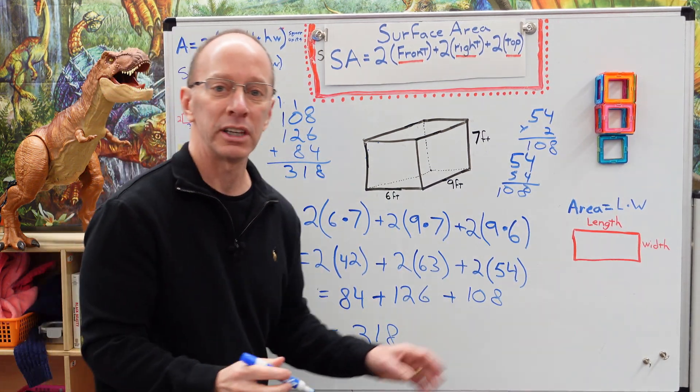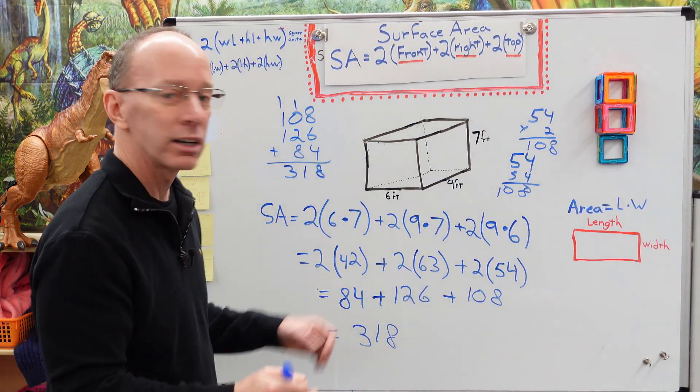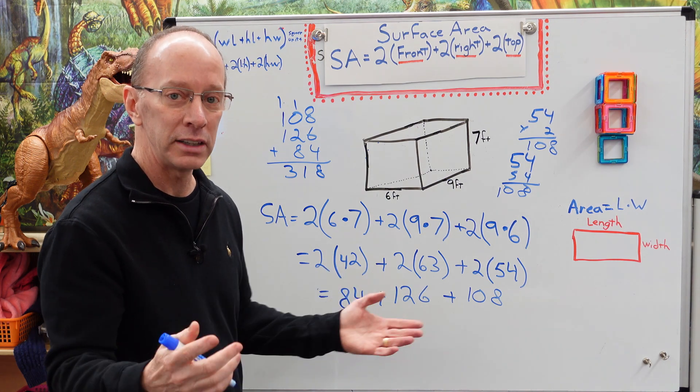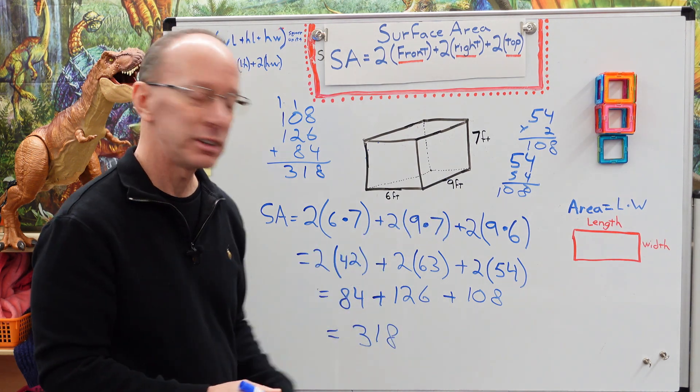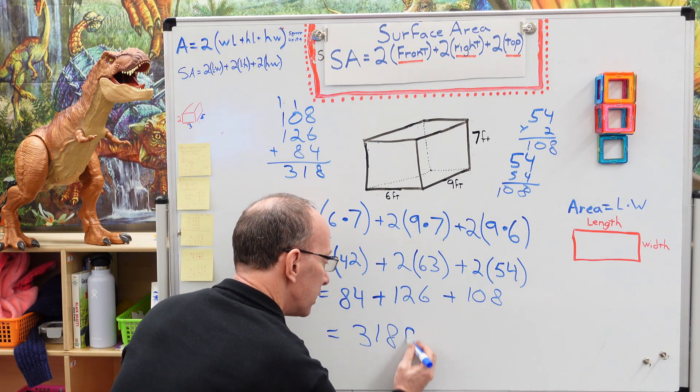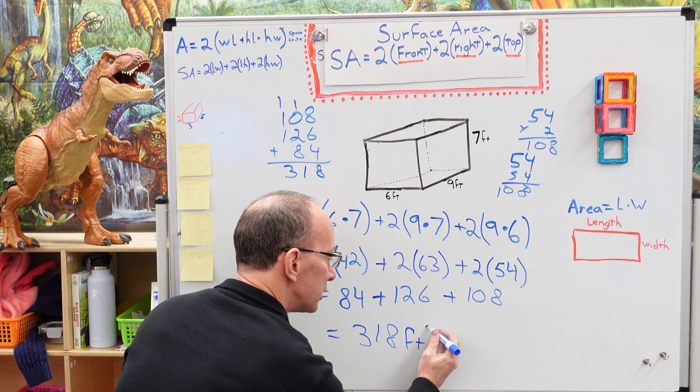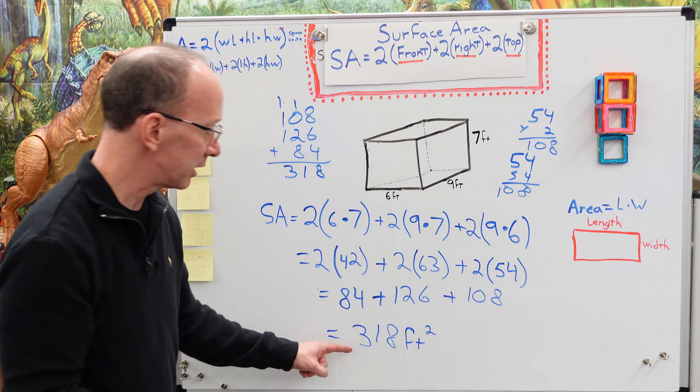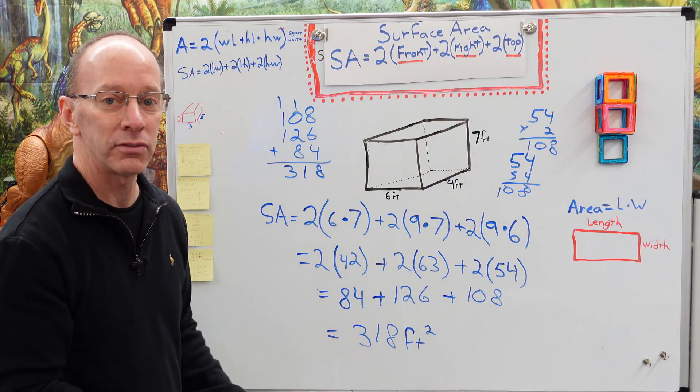Now we're going to go ahead and put the unit of measure. So it could be inches. It could be feet. It could be centimeters. I am using feet. So I'm putting the FT right here and you want to put squared. So this means that this is 318 squared feet.